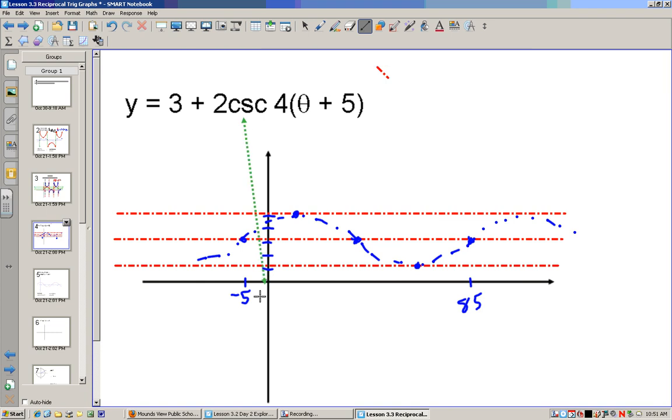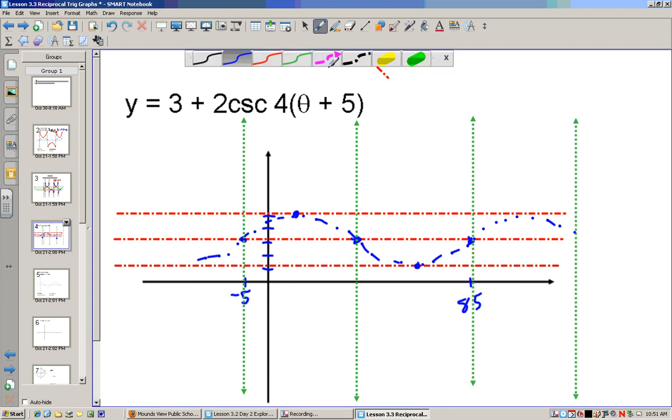And now, wherever it crosses the sinusoidal axis, I'm going to draw my vertical asymptotes. And now I start at my peaks, and my valleys, and draw my cosecant graph. There you go. Hopefully you guys understand how to draw cosecant graphs now.